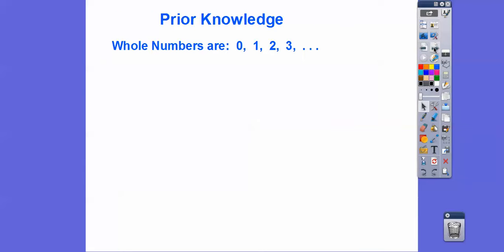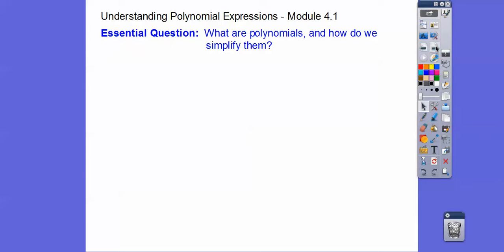So just to review real quick, whole numbers are counting numbers starting at 0 — 0, 1, 2, 3, 4, 5, 6, 7, 8. So those are whole numbers. Integers are whole numbers and all the negative whole numbers. So we're going to be focusing on, in this lesson, whole numbers.